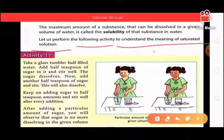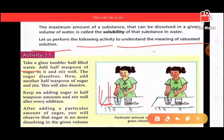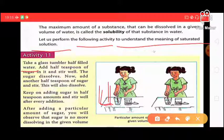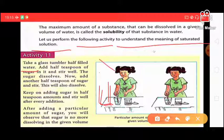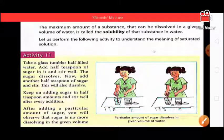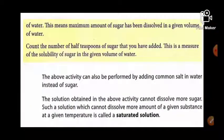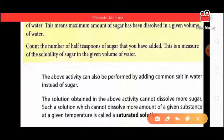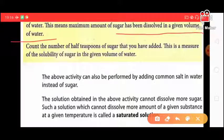Activity: Take a glass tumbler and fill it half with water. Then add half a teaspoon of sugar and mix. Keep adding sugar little by little until no more sugar dissolves. The maximum amount of sugar dissolved in a given volume of water represents its solubility. This solution, where no more sugar can be dissolved, is called a saturated solution.